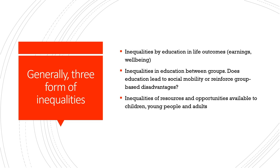Broadly in education, we measure inequalities in three forms. First, we measure inequalities by education in life outcomes by focusing on earnings and well-being. We have studied intergenerational mobility and differences in earnings based upon higher education, which is an example of inequalities by education in life outcomes. We can also have inequalities in education between groups, which is the focus of today's lesson. Whether education leads to social mobility or reinforces group-based disadvantages is increasingly being considered in development economics.